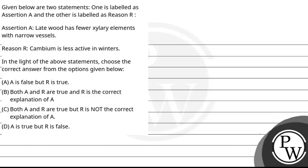Hello, let's read this question. Given below are two statements: one is labeled as assertion and the other as reason. Assertion: Late wood has fewer xylary elements with narrow vessels. Reason: Cambium is less active in winters. Based on these statements, we have four options to select from.